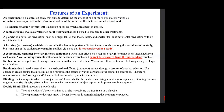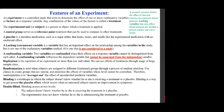Double blind: blinding occurs at two levels — the subject doesn't know whether they are receiving the treatment or a placebo, and the experimenter doesn't know whether they are administering the treatment or the placebo. Blinding is important. For example, a research scientist studies the effect of diet and exercise on blood pressure; lurking variables that also affect blood pressure include whether a person smokes and their stress levels.